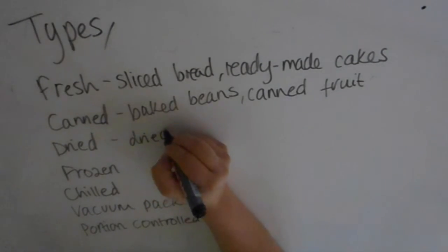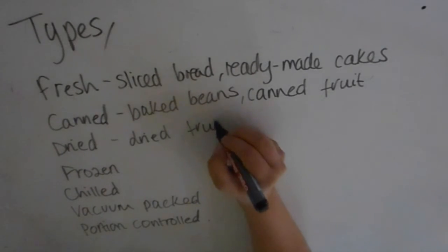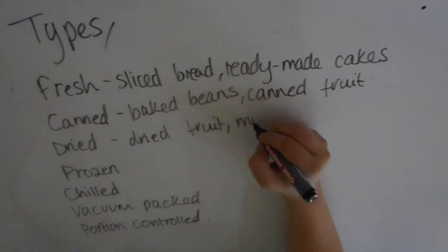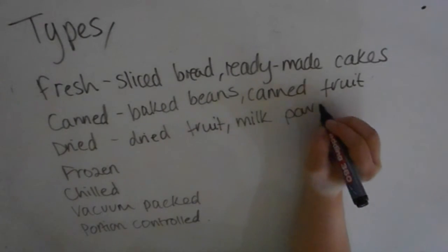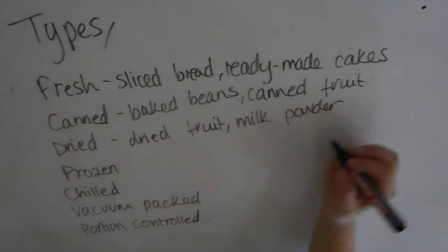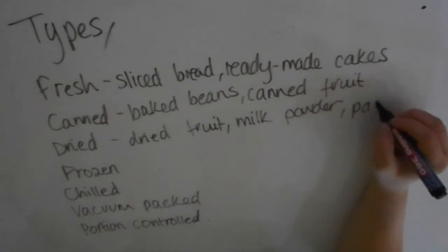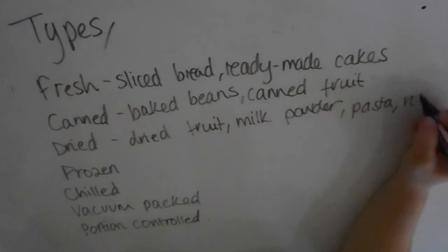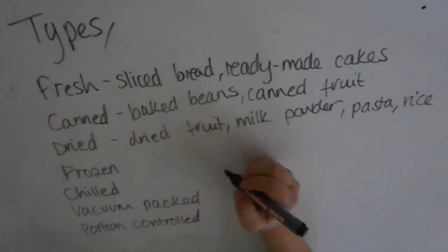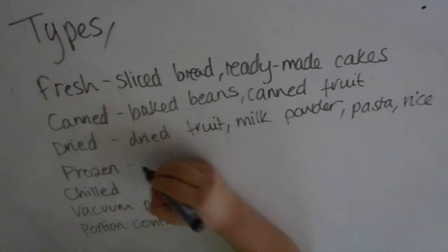You can also get dried fruits, milk powder, pasta, and rice as dry convenience products. Some of you have made pasta as part of your coursework, so you know there are lots of steps needed to make pasta. You can dry it out, which means you don't have to make it yourself. Going back to the advantages, it's going to save lots of time.